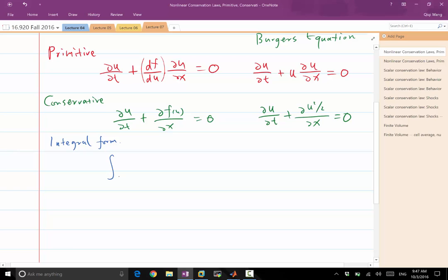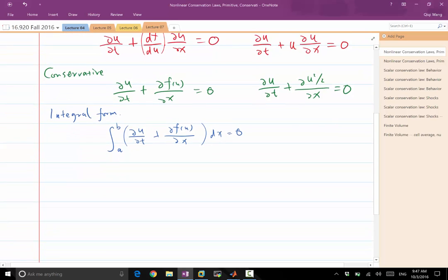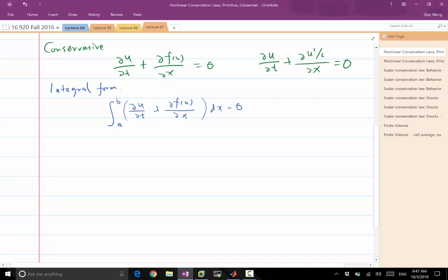So, integral form. The integral form is taking the conservative form and integrate it over an interval. So, integrate from a to b, a is less than b, ∂u/∂t plus ∂f/∂x over dx should equal to 0. Right? Now, in the integral form, our a and b are fixed, independent of t, independent of u. So, they are just fixed numbers, two arbitrary fixed numbers with a less than b.